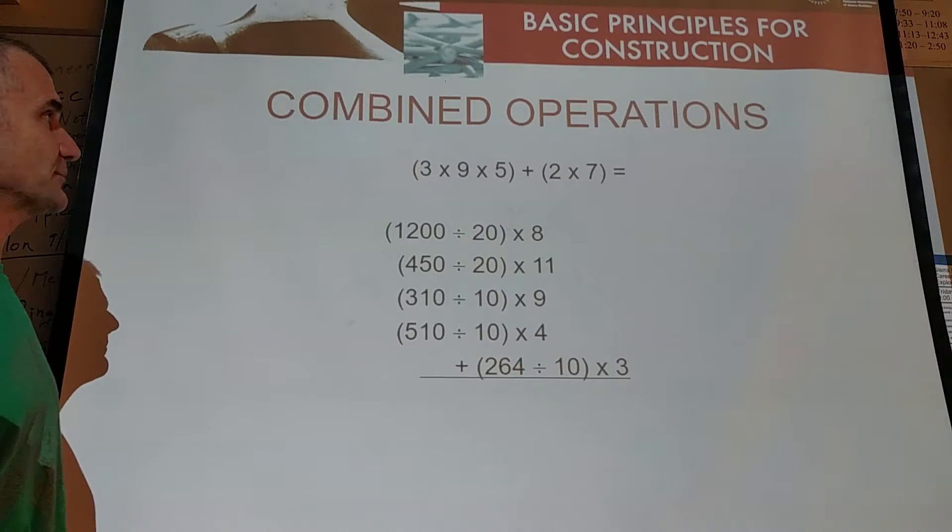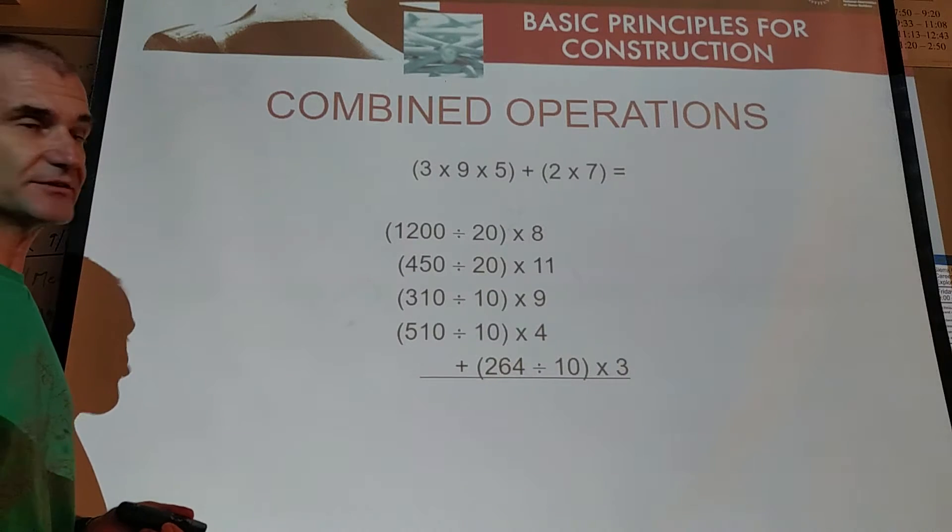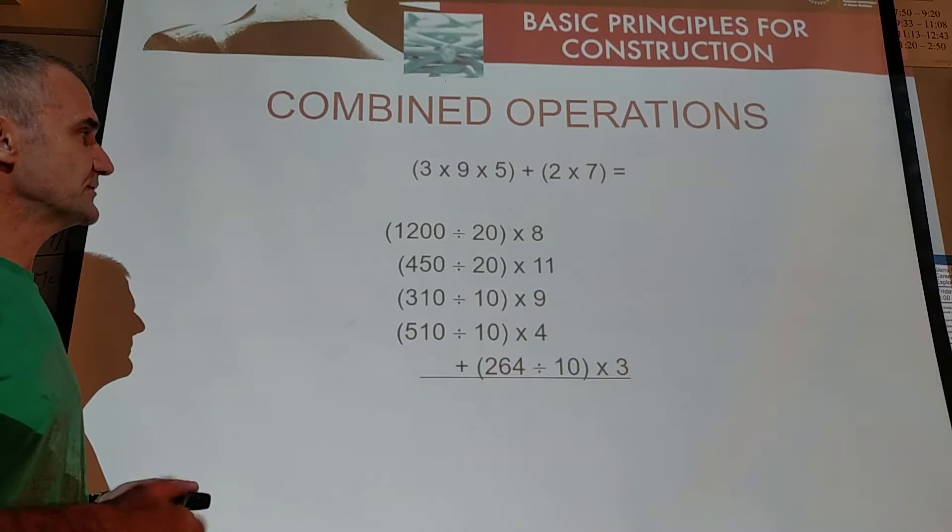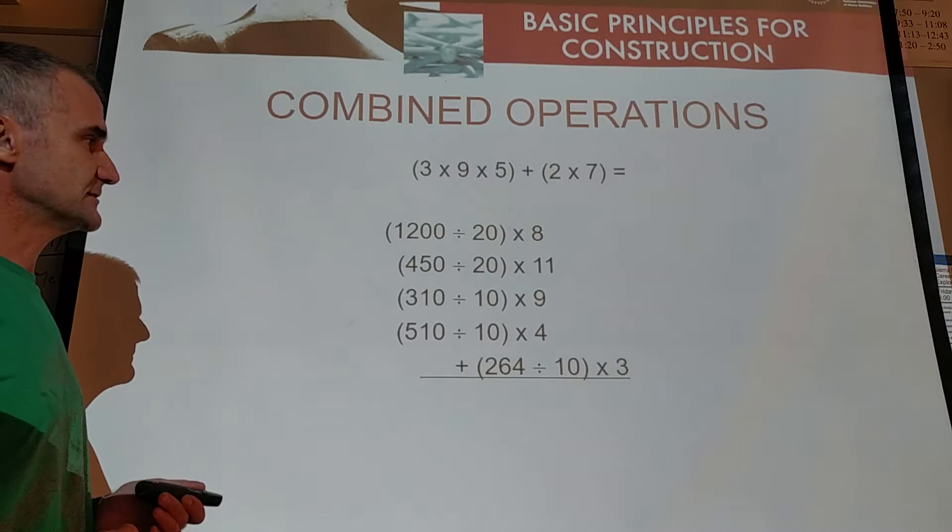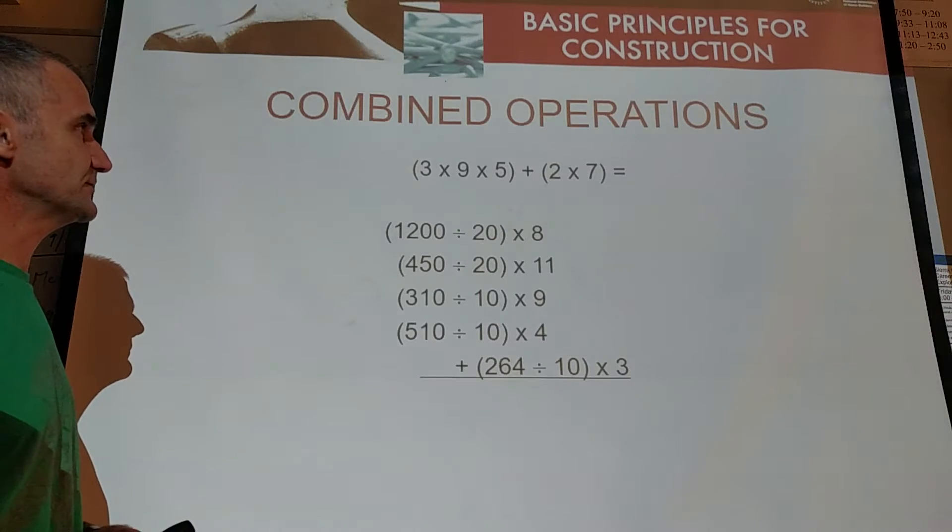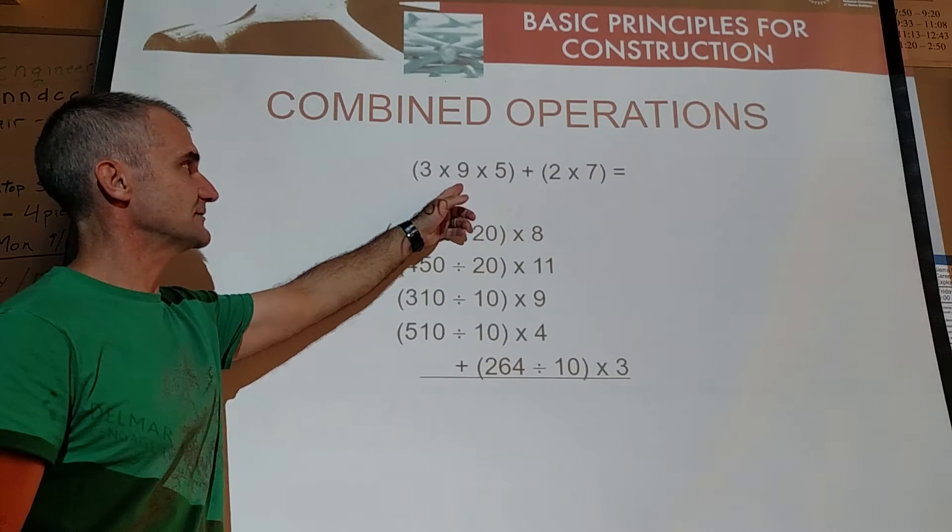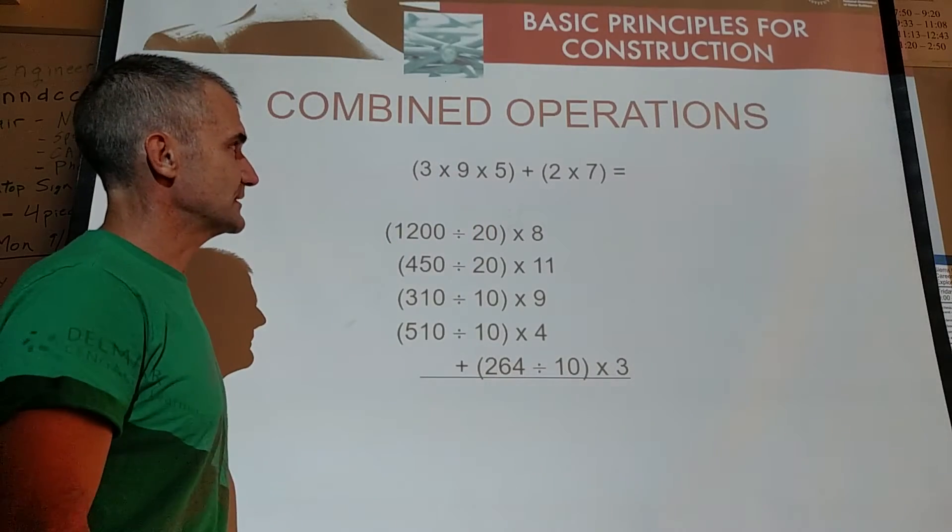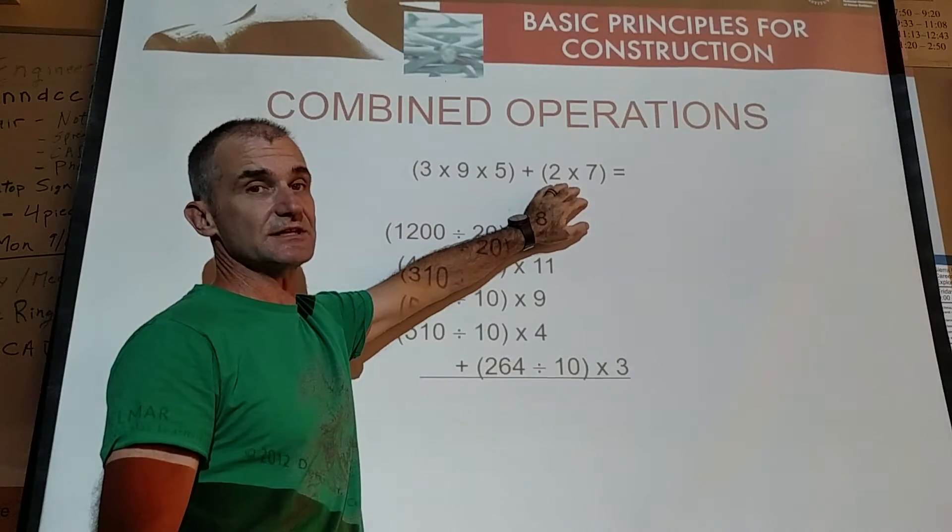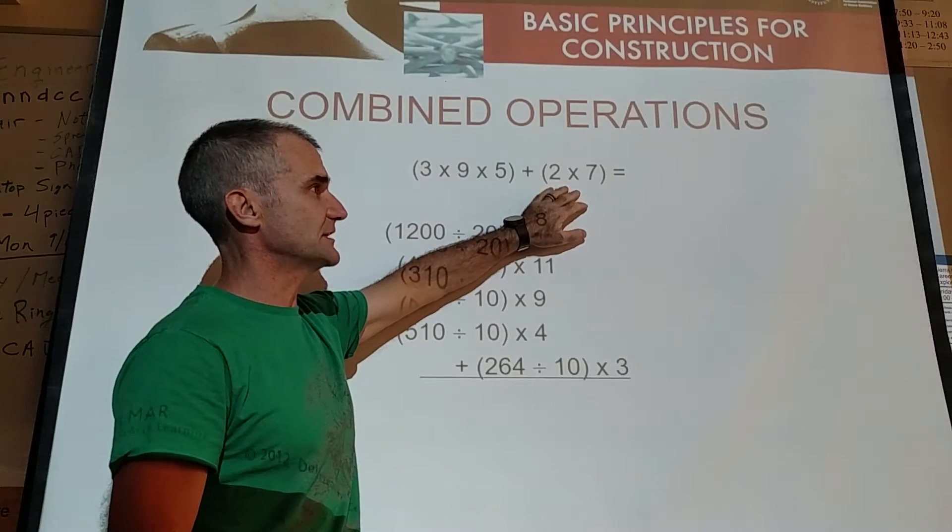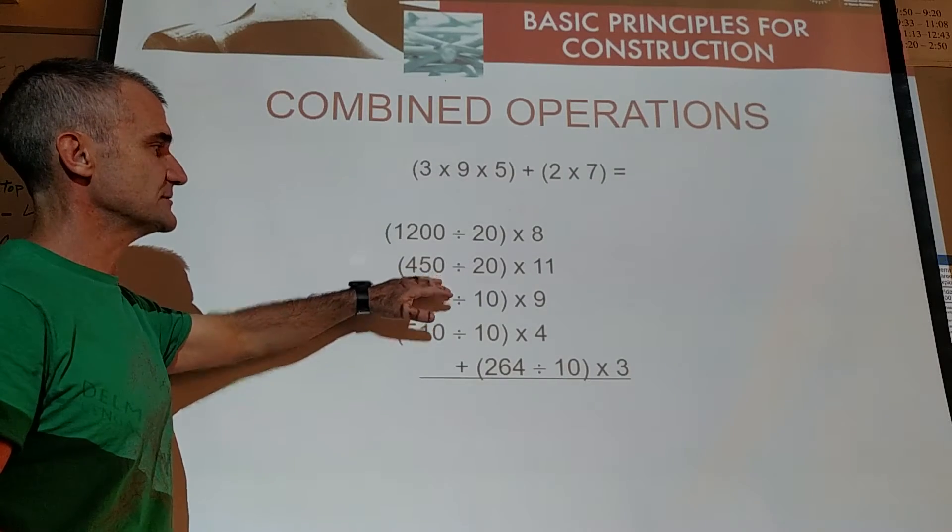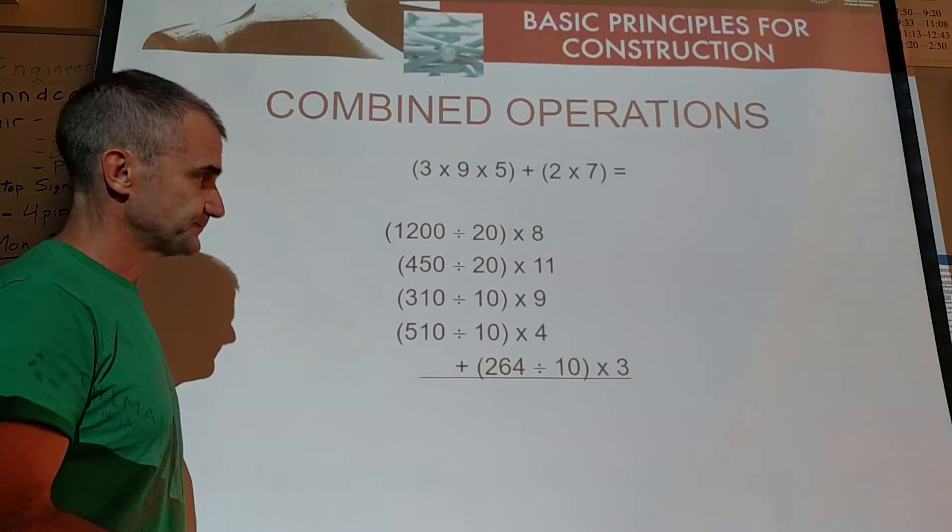Now this is order of operations. The rule here is you always do what's inside of the parentheses first. There's a mnemonic device, PEMDAS. Parentheses, exponents, multiplication, division, addition, subtraction. So if I'm doing all these operations, I do everything in the parentheses first. So here I do 3 times 9, 27 times 5. If I need to multiply that out to get 135. 135 plus, I do this first, 14. 135 plus 14 is 149. So again, the order of operations is you do the parentheses first, and then the multiplication.